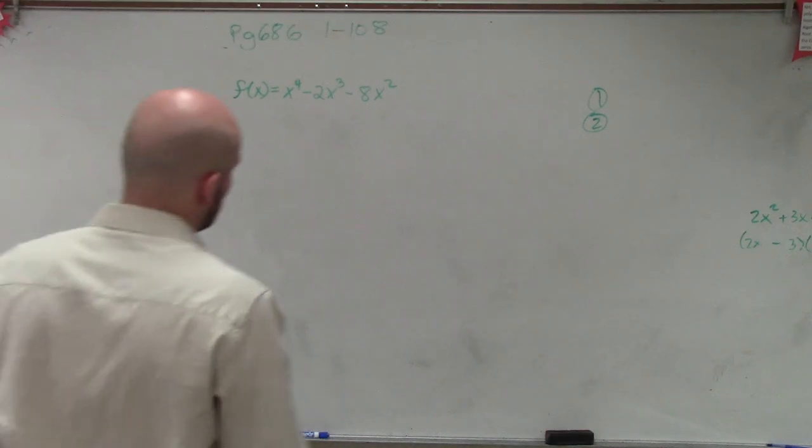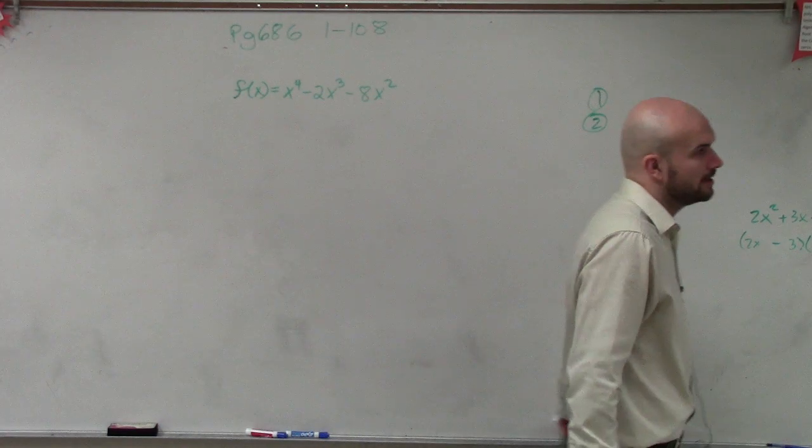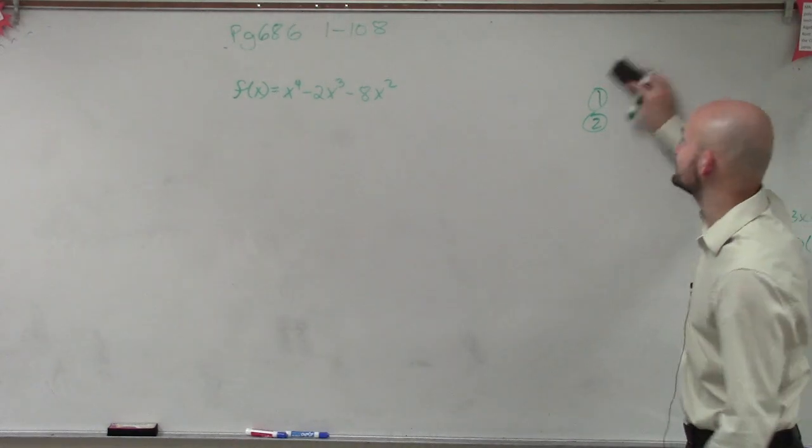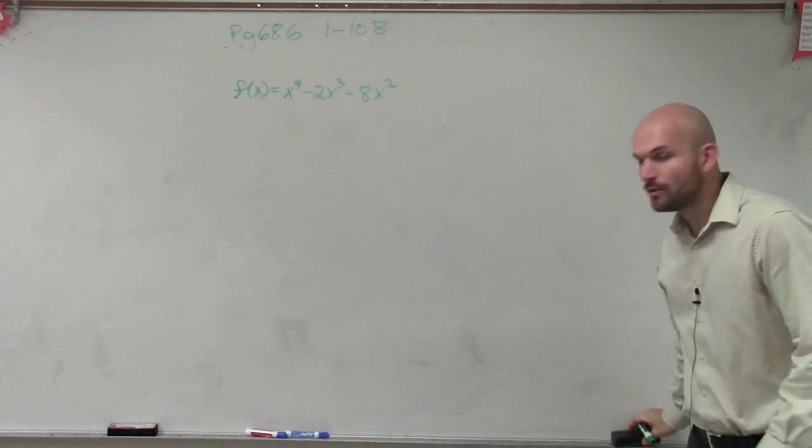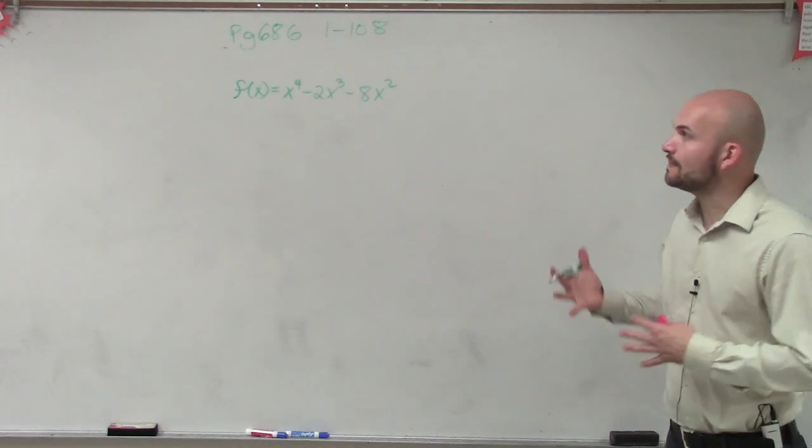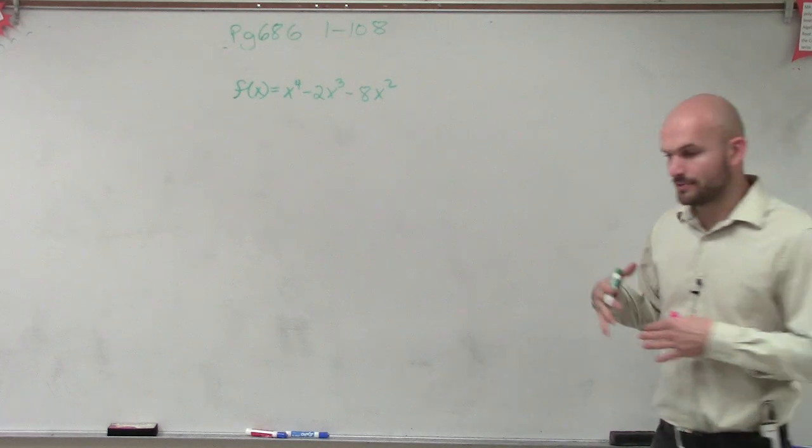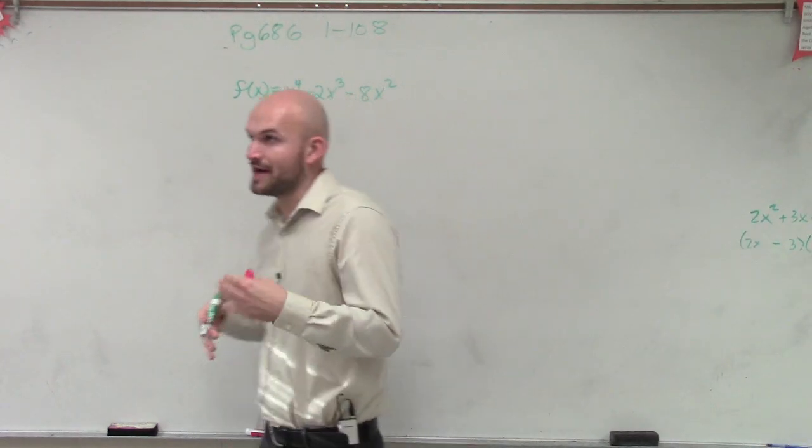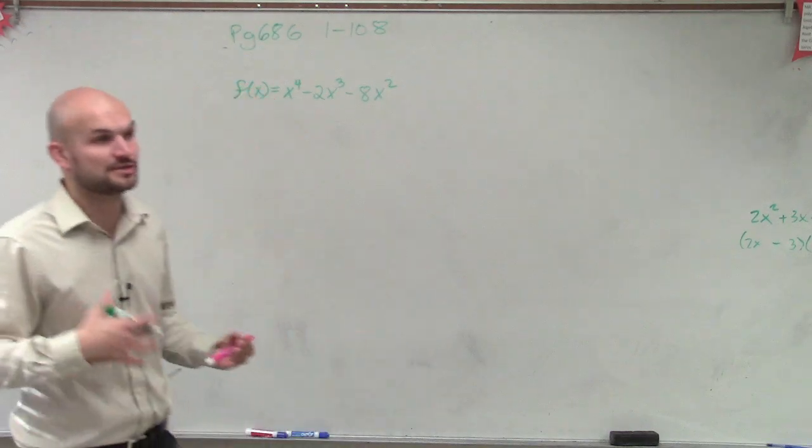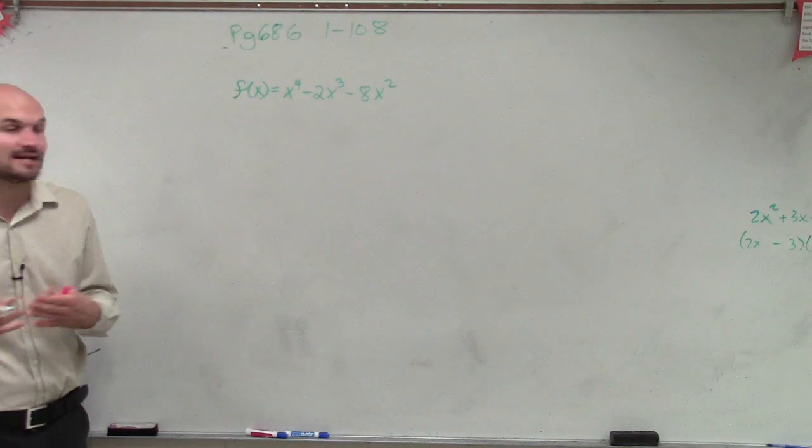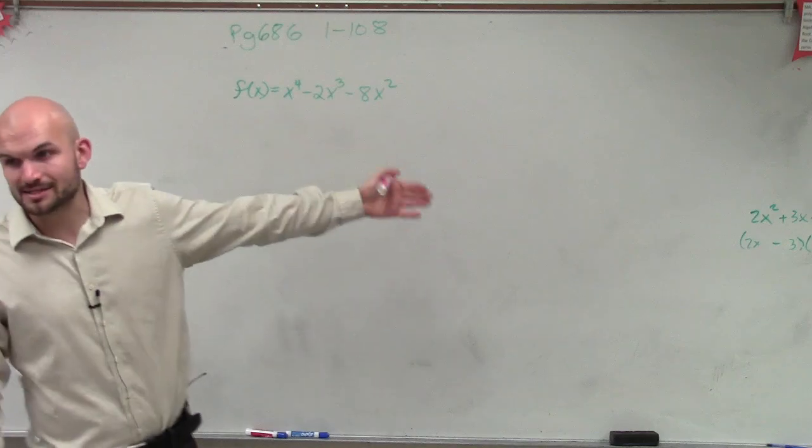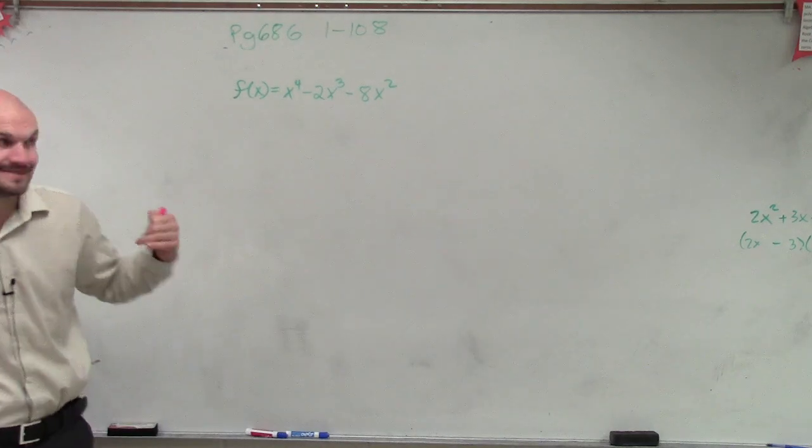So to determine the number of possible real positive and negative zeros using Descartes' rule of signs, what we need to do is look at the positive and negative x and determine the variations of the sign. That's going to help us determine the number of positive or negative real zeros.